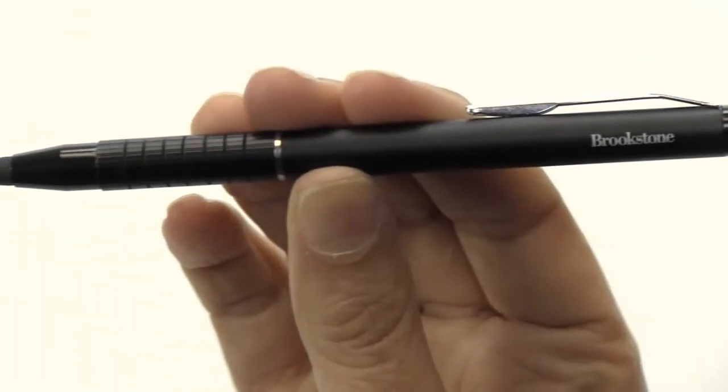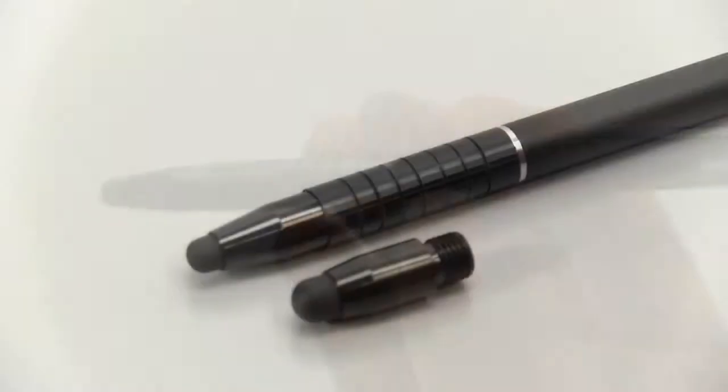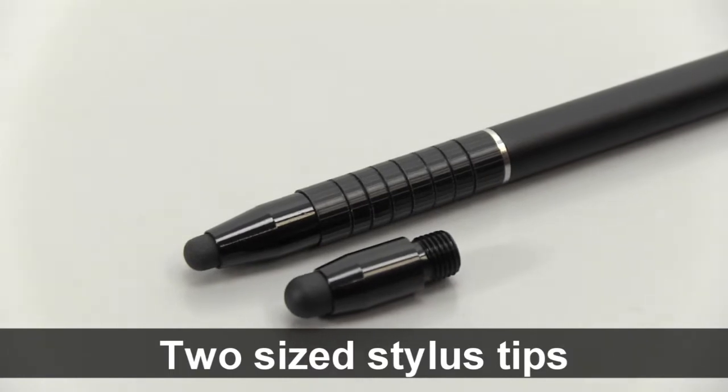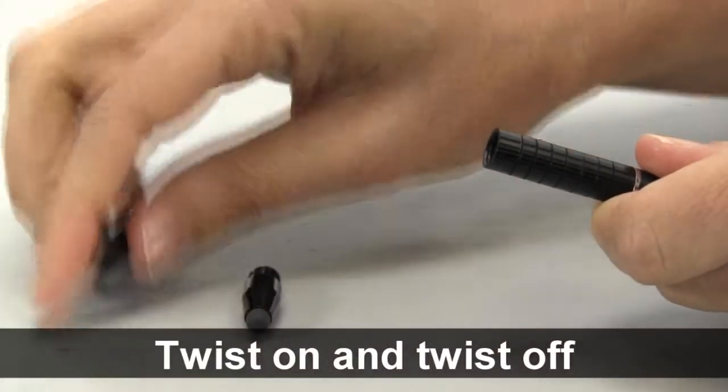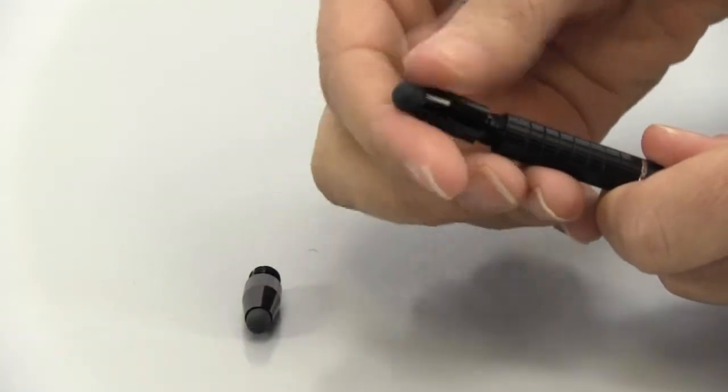Its lightweight design and pocket clip give it a pen-like feel. Includes two sizes of stylus tips, large and small. The tips can be interchanged just by twisting one out and twisting the new one in.